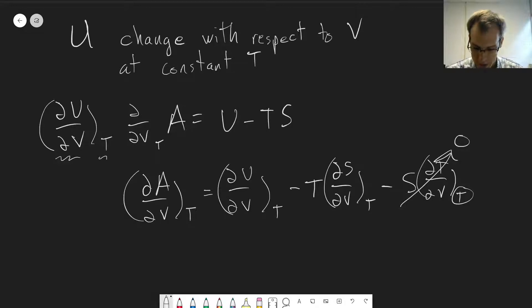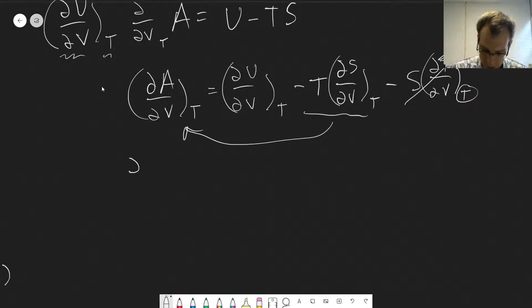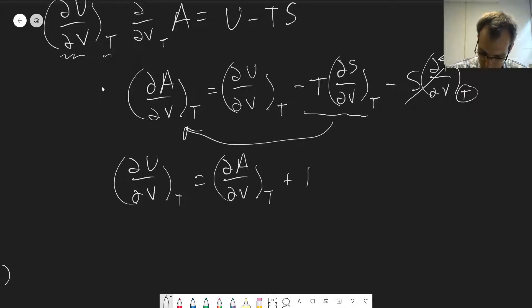Okay, so now we can make some substitutions. So first we can move this over to the left-hand side so that dU/dV is all by itself, dU/dV at constant T. And we can make some substitutions for dA/dV at constant T plus T times dS/dV at constant T.